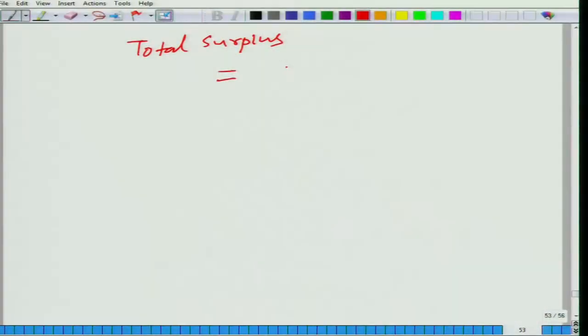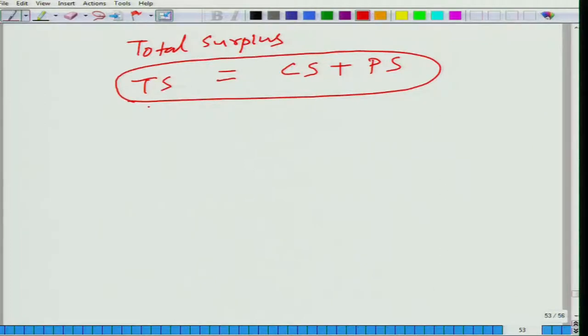Now, we can give the definition of total surplus. What is total surplus? Total surplus from a transaction is nothing but the summation of consumer surplus and producer surplus. Let me write consumer surplus in short as CS and producer surplus as PS. So, TS, that is total surplus, is nothing but summation of consumer surplus and producer surplus. Let us look at it in a diagram.